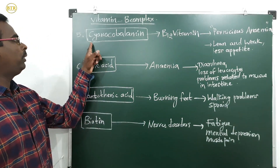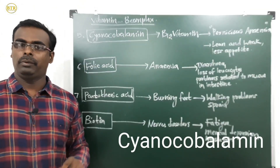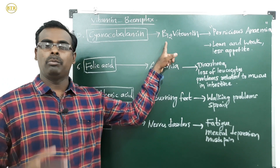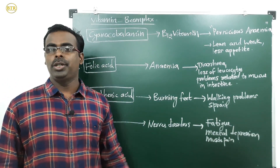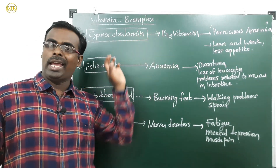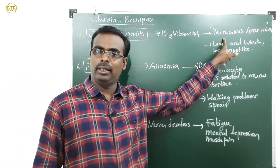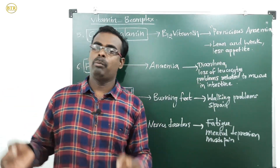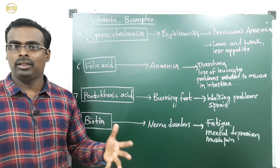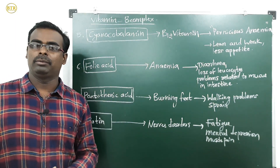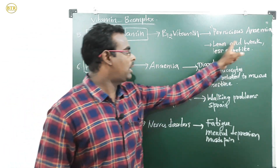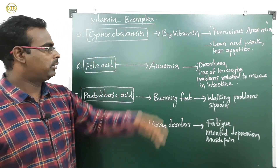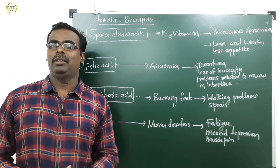The fifth B complex vitamin is cyanocobalamin, also called B12 vitamin. Deficiency of B12 causes pernicious anemia — a severe blood loss disease. Symptoms include becoming lean and weak, and loss of appetite (no desire to eat food).